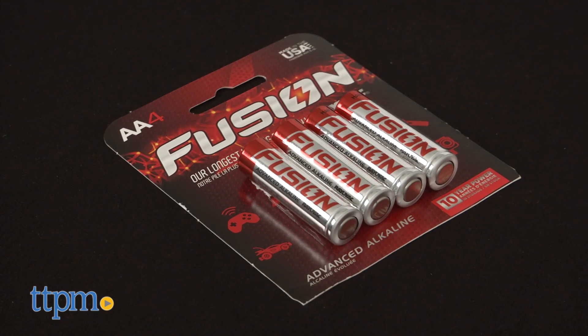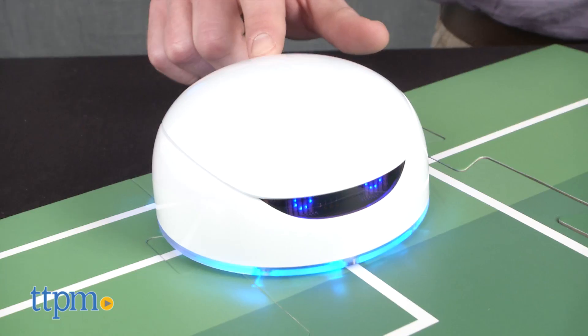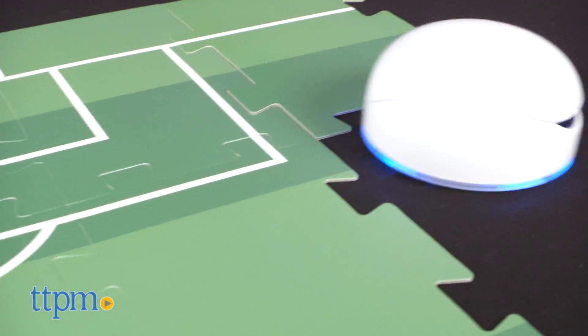After you install the batteries, Vortex requires 4 AA per robot, and download the smartphone app, the quick start guide has kids interacting directly.